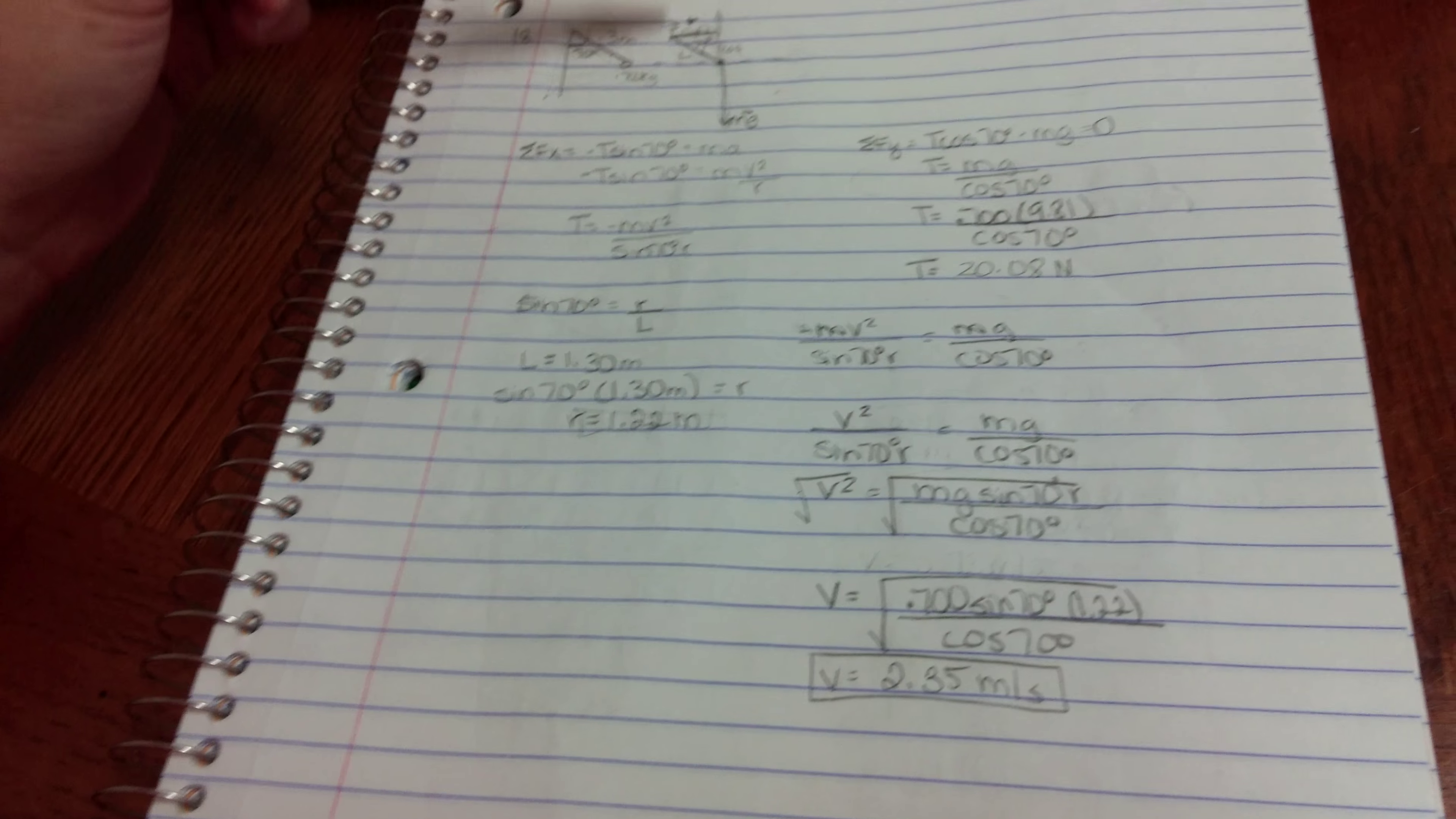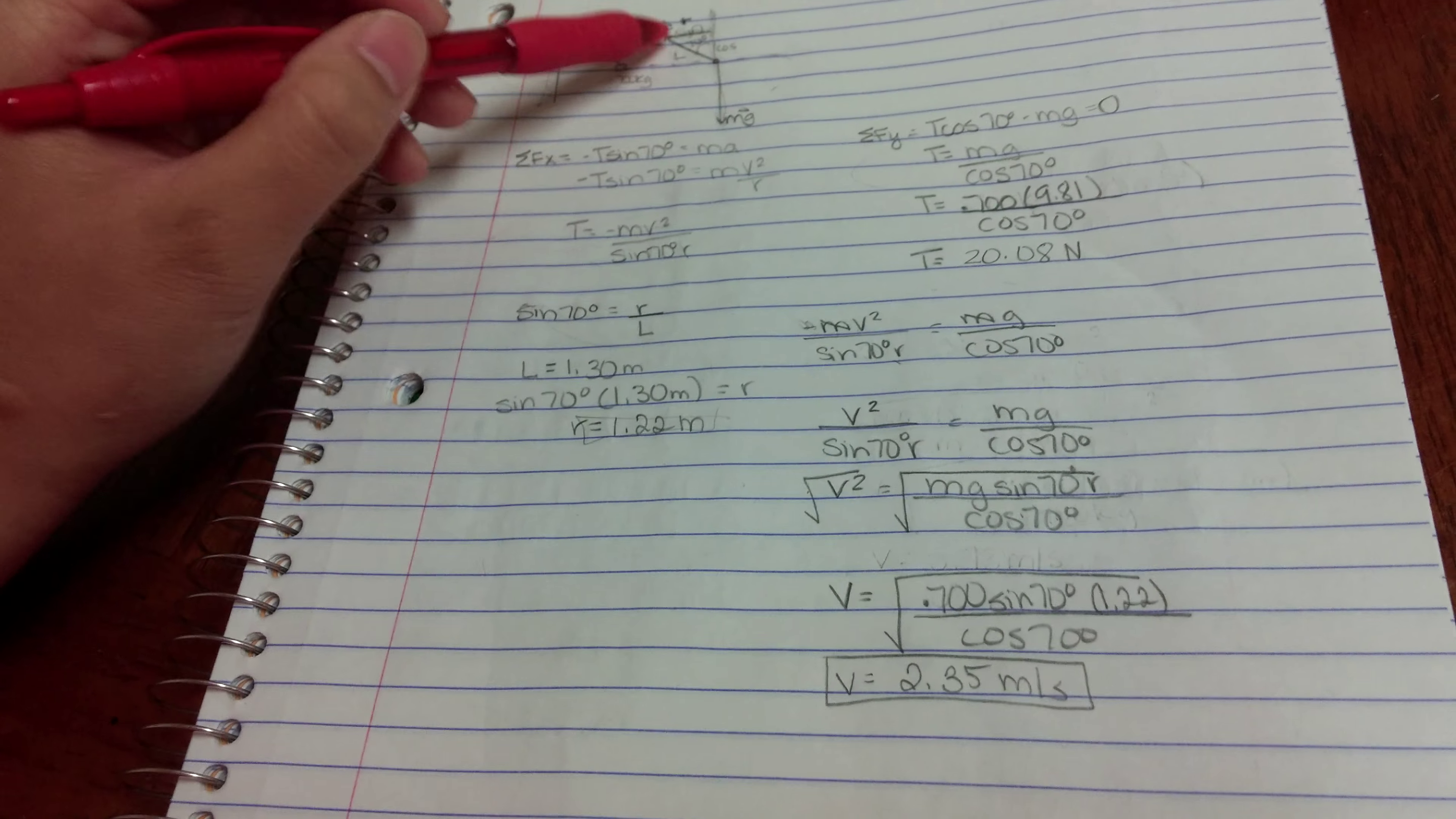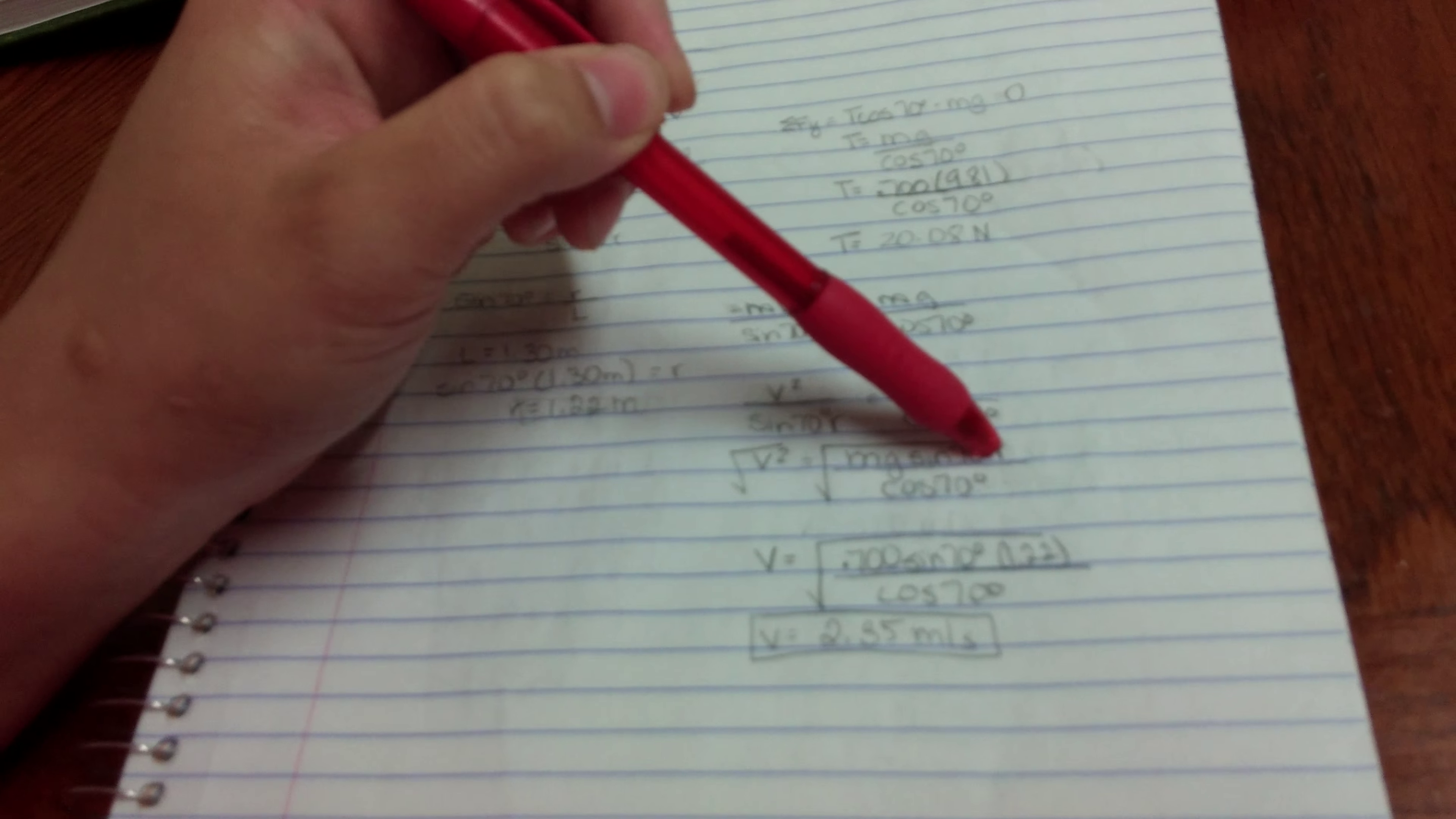So I go up here. Since r is sine, sine is opposite over hypotenuse. So I know sine of 70 equals opposite over hypotenuse. My radius is the opposite and my hypotenuse is the length. I know my length. And I'm using sine of 70. I multiply length to the other side and I solve for r. So I got the radius of 1.22 meters. I plug r into this equation.